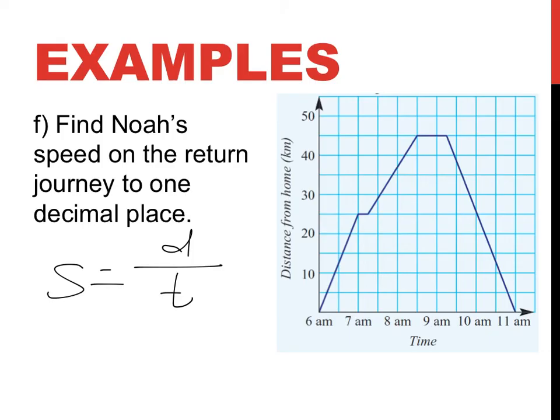How far did he travel? If he started 45 kilometers away from home and he got home, his distance would have been 45 kilometers. Because that's how far he started on his return journey and he got all the way back down to zero, so 45.